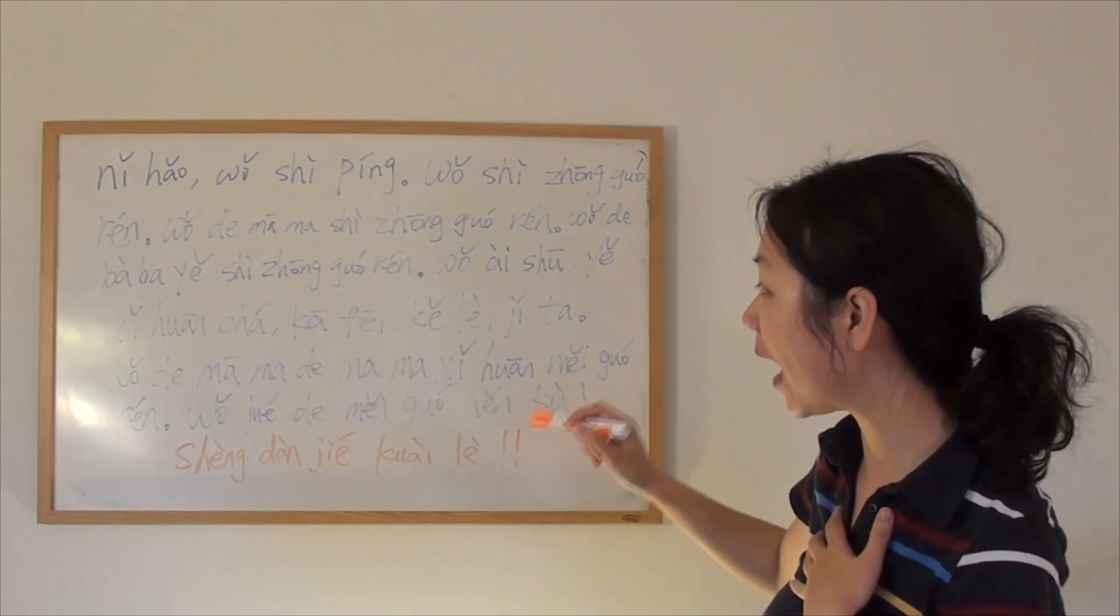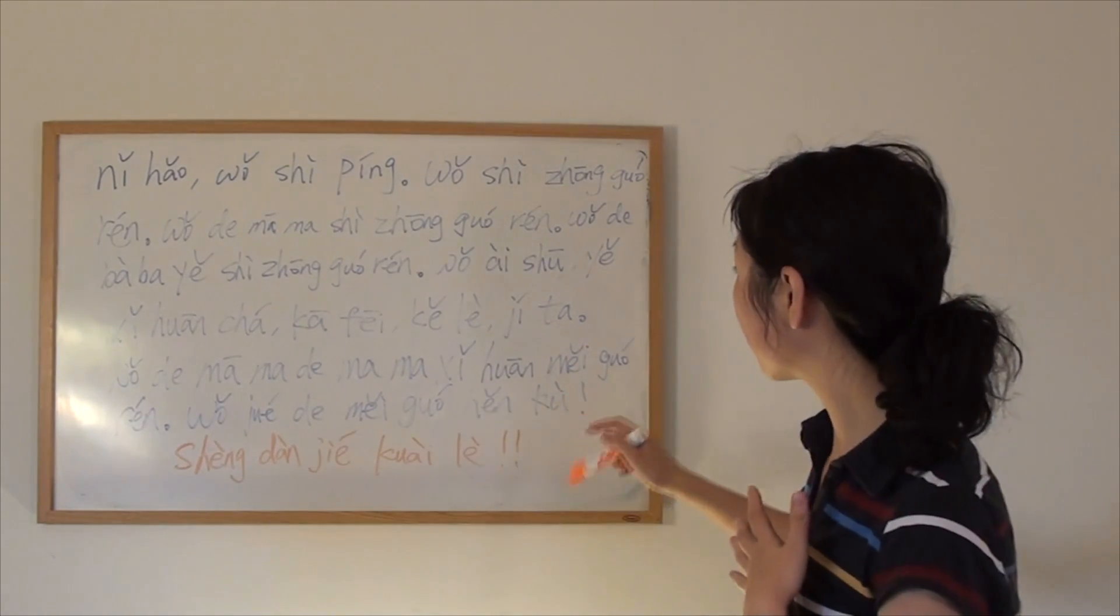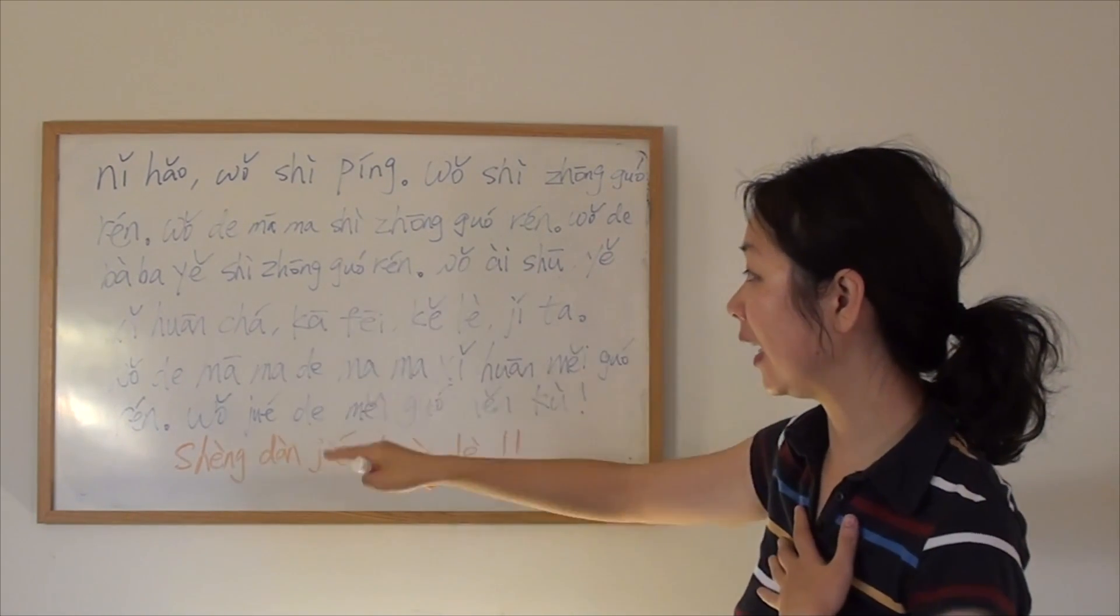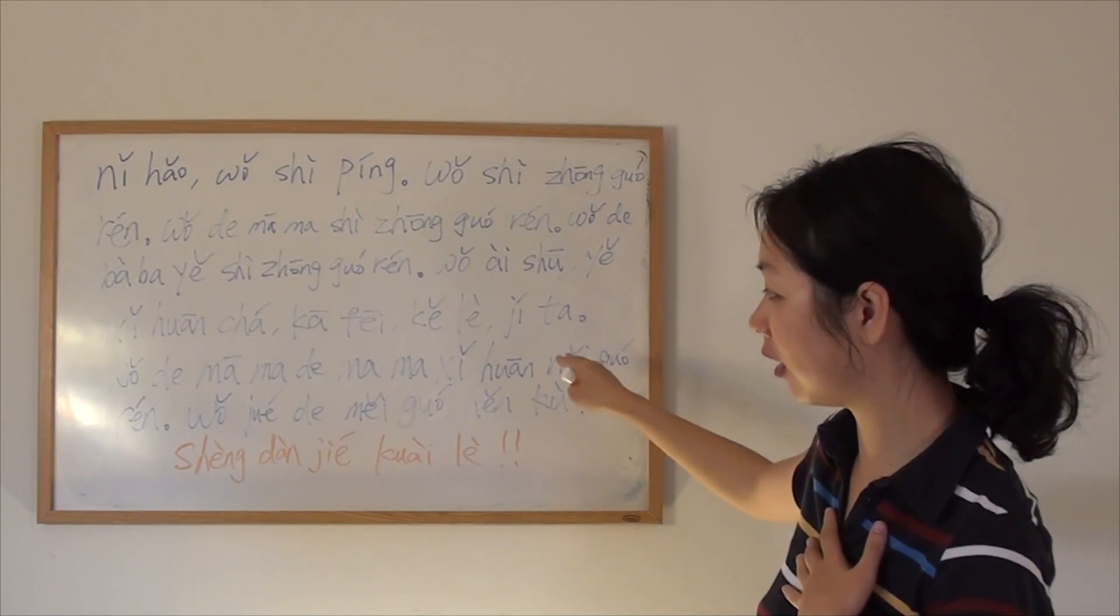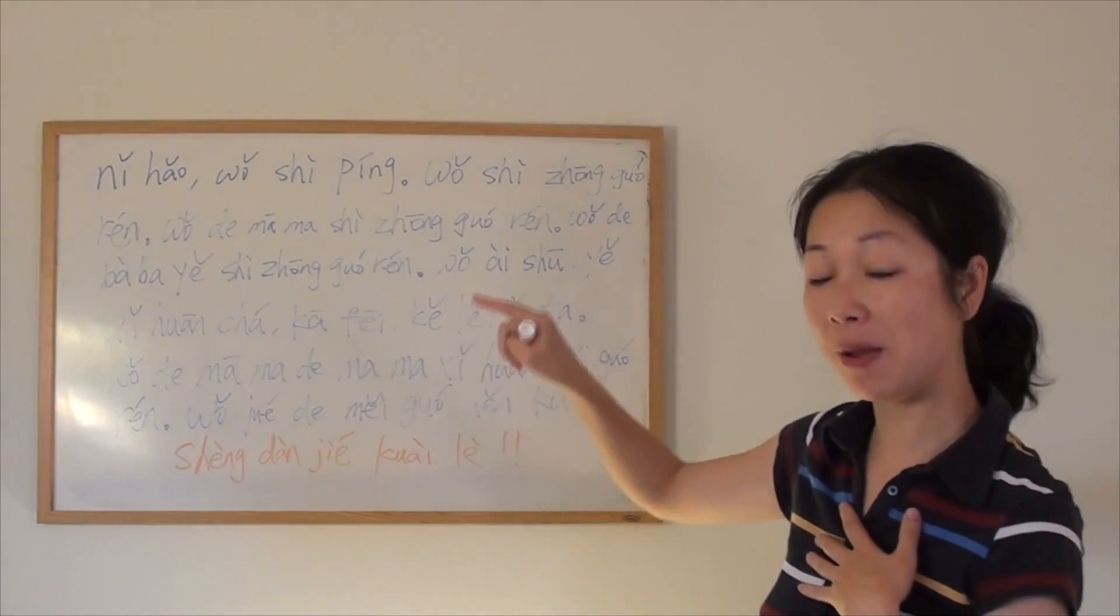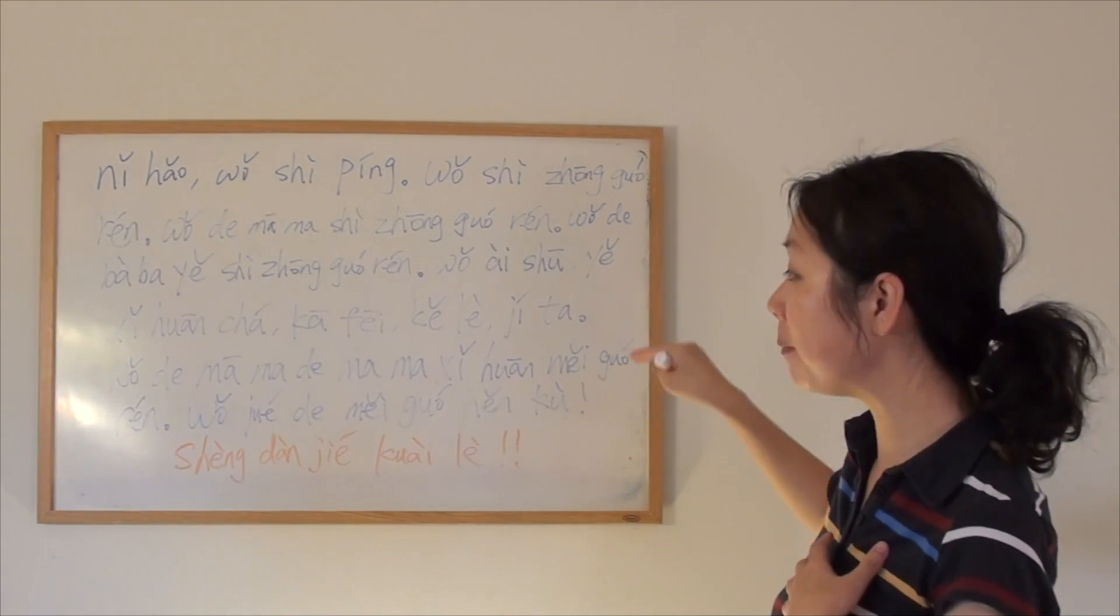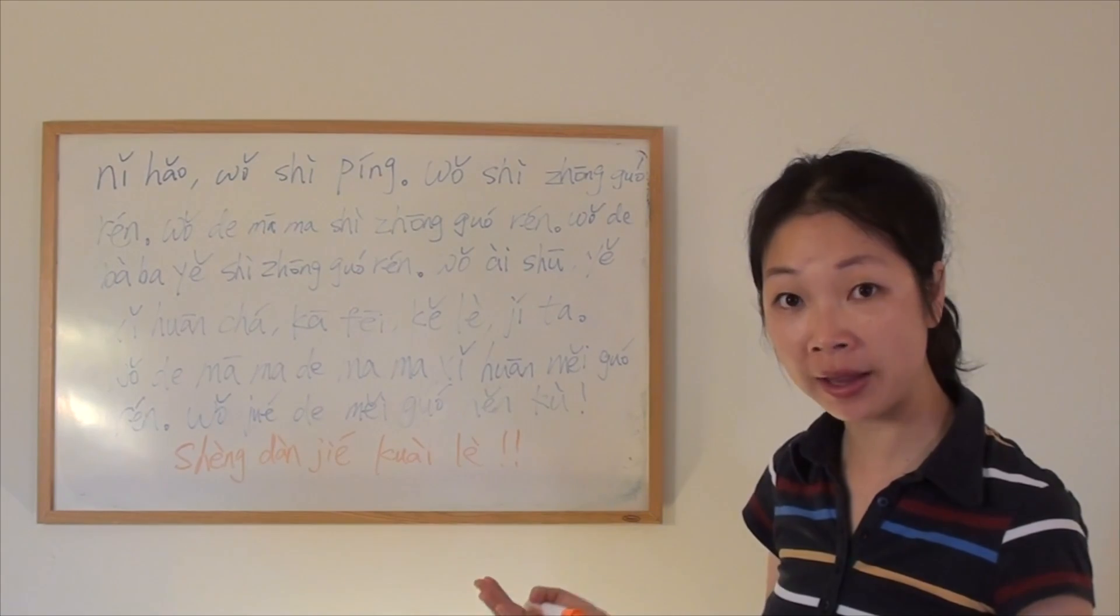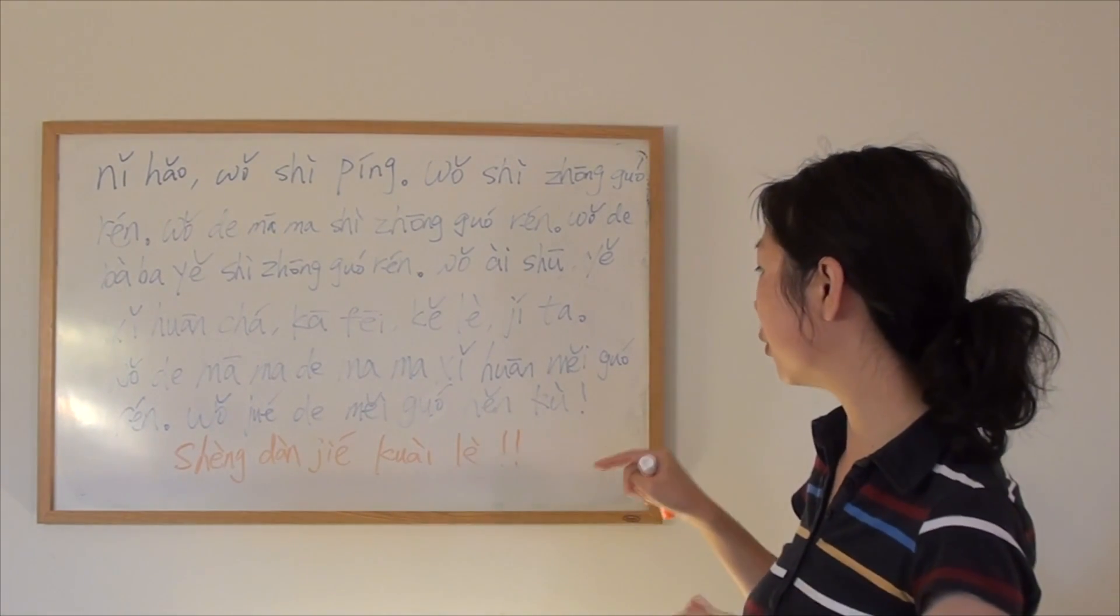我爱书，也喜欢茶，咖啡，可乐，吉他。I love books, also like tea, coffee, coke, and guitar. 我的妈妈的妈妈, my mom's mom means my grandma, 喜欢美国人, likes American. 我觉得美国人很酷。